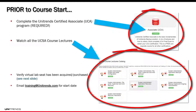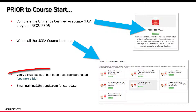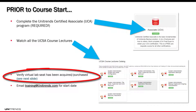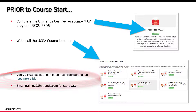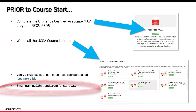Once you've watched all the lectures and completed the UCA, you're going to verify your virtual lab seat has been acquired or purchased. We're going to talk about that in more detail in the next slide, and you're going to email training@unitrends.com whenever you're ready to start.